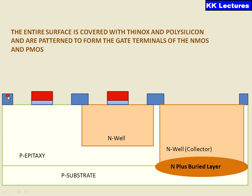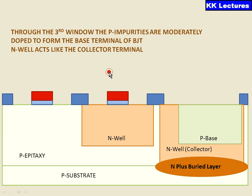We are placing the polysilicon layer, and again doing the same process with UV rays and removing the unwanted material. Finally, on the gate of your NMOS and on the gate of your PMOS, we have the polysilicon.